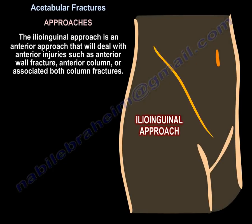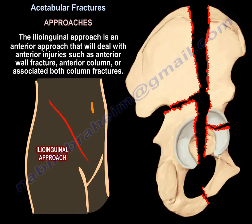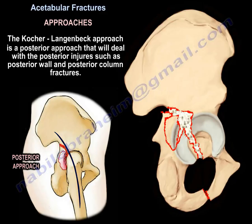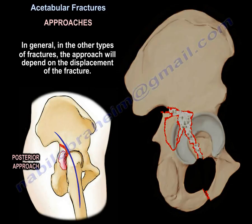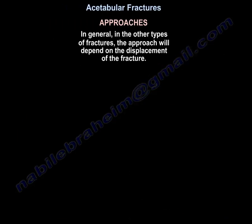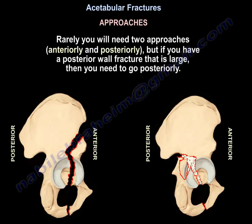The ilioinguinal approach is an anterior approach dealing with anterior injuries such as anterior wall, anterior column, and associated both column fractures. The Kocher-Langenbeck is a posterior approach dealing with posterior wall and posterior column injuries. In general, the approach depends on the displacement of the fracture — anteriorly displaced goes anterior, posteriorly displaced goes posterior. Rarely both approaches are needed. If you have a large posterior wall fracture, you must go posteriorly.